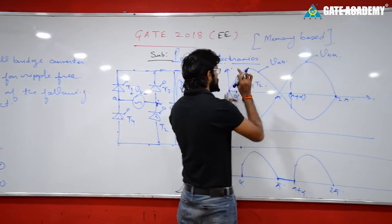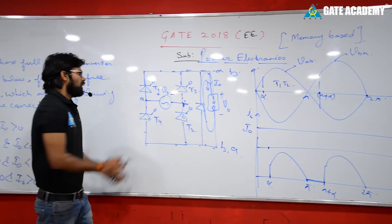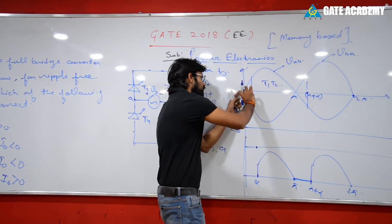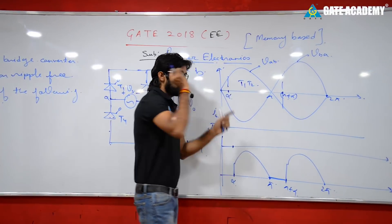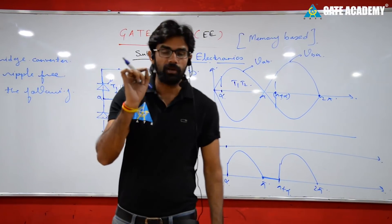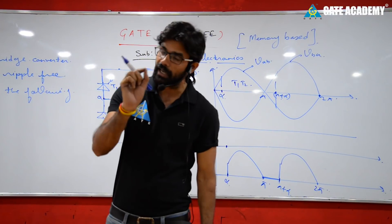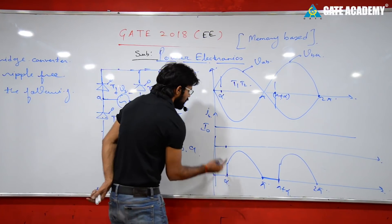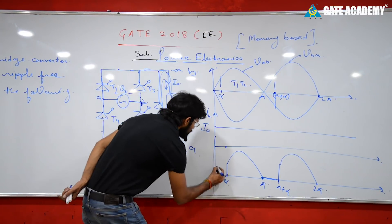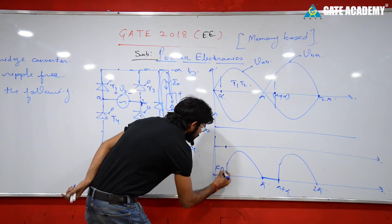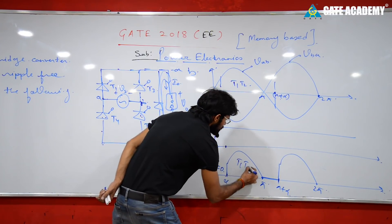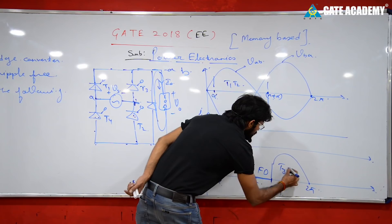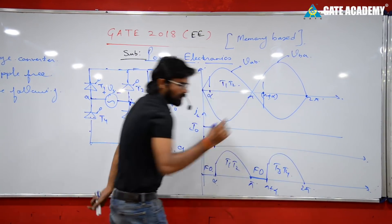From zero to alpha, what is happening? T1 and T2 can conduct — they are in forward bias condition but in forward blocking mode because triggering hasn't occurred yet at alpha. So from zero to alpha, the freewheeling diode conducts and keeps the current from going to zero. T1 and T2 are in forward blocking, and the freewheeling diode is conducting.